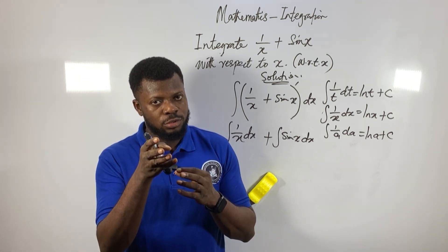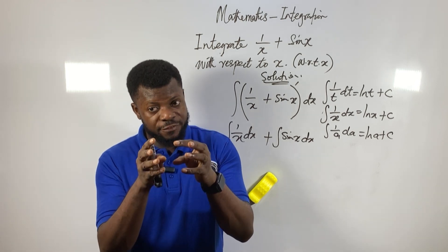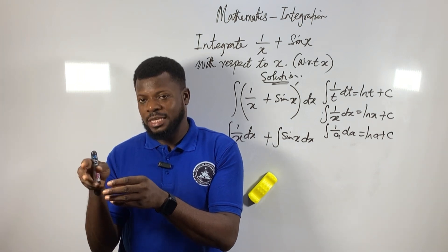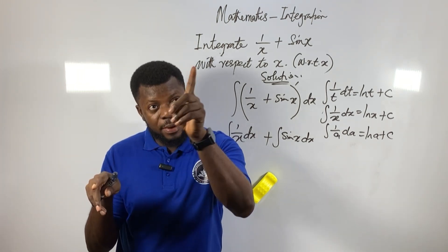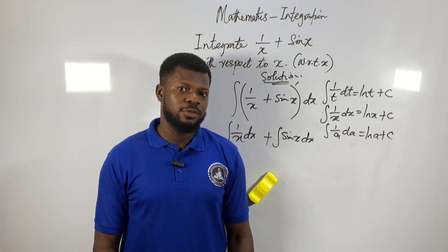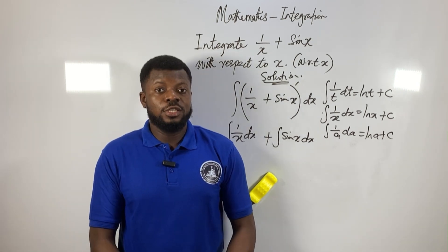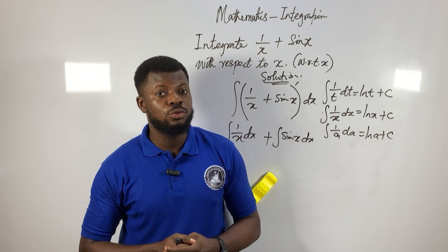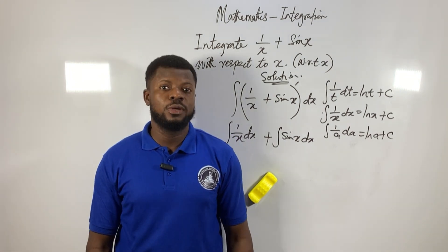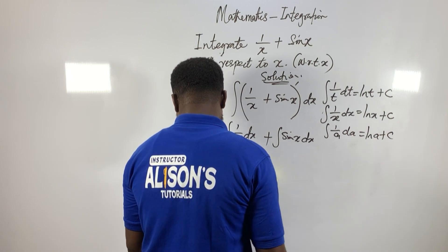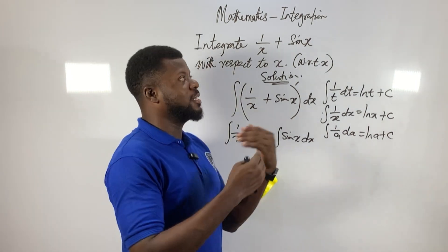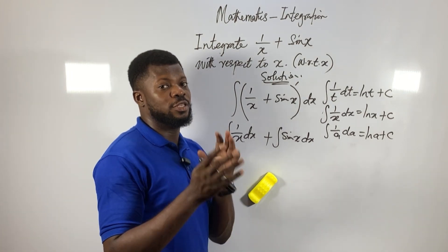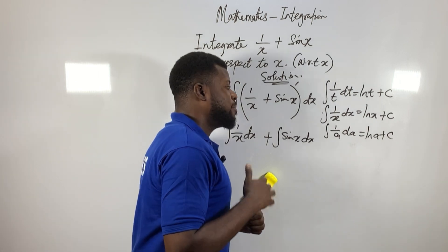If I ask you to differentiate a function and you get an answer, then if you integrate that answer, you should get back the original function. For example: differentiate 2x — the answer is 2. If you then integrate 2, you get back 2x. That is how differentiation and integration work together — they are the antidote of each other.